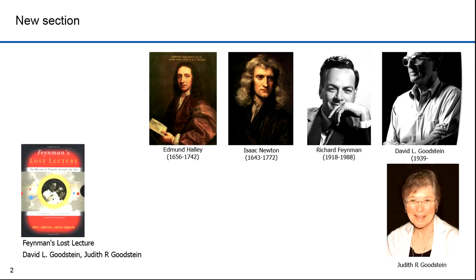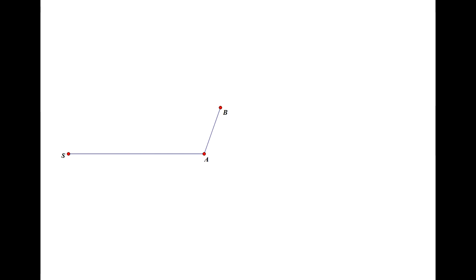In this diagram, S represents the Sun — consider it our immovable central force. A is the first position of our planet, and B is here. The line segment between A and B denotes the distance traveled over a given time interval, delta T. The motion from A to B is linear, because there's no force acting on the planet — it travels, according to Newton's first law, in a straight line. If the planet continues unperturbed, it will continue in a straight line. At time delta T, starting at B, it will reach little c. The length of segment AB equals the length of segment B-little-c.